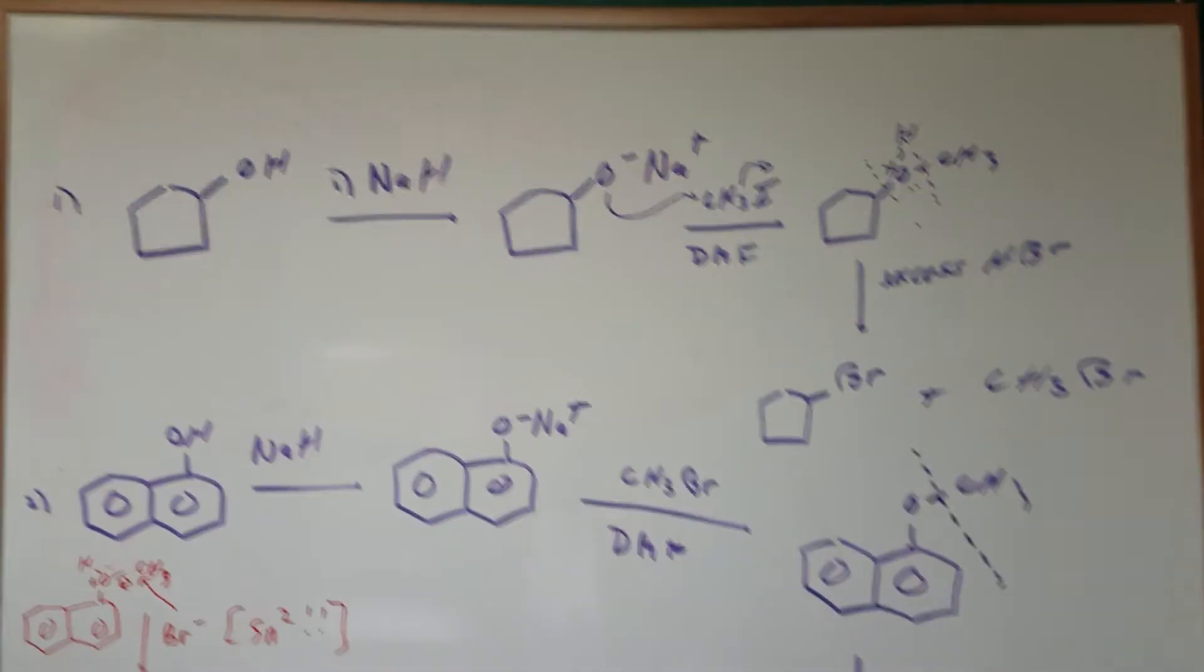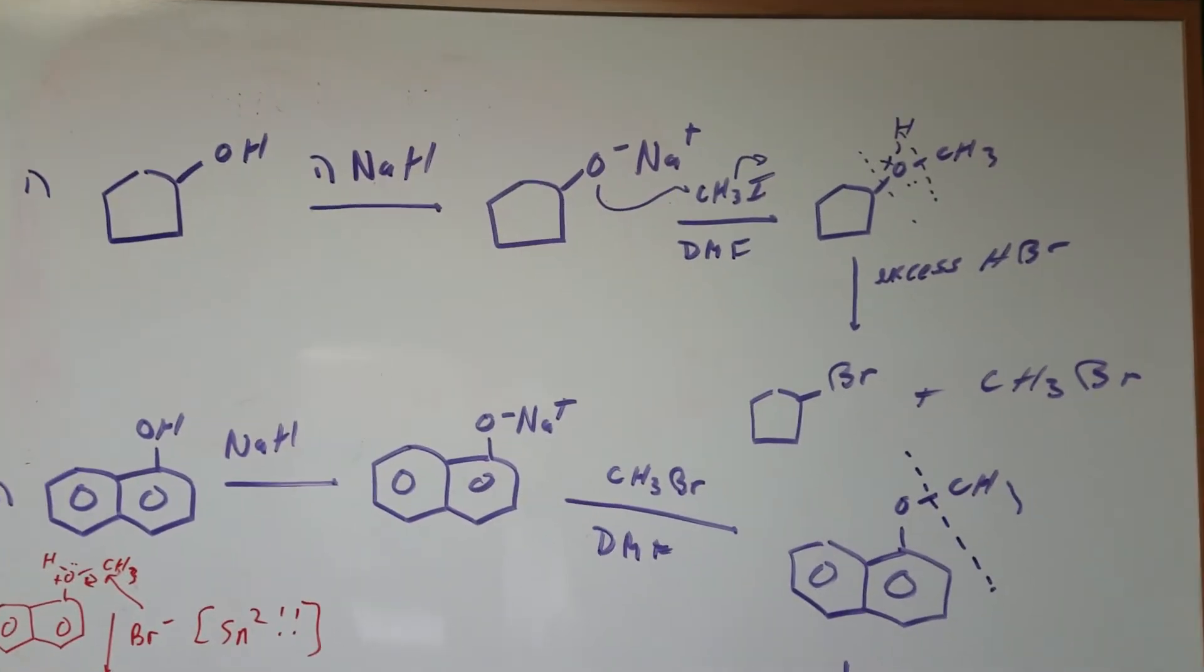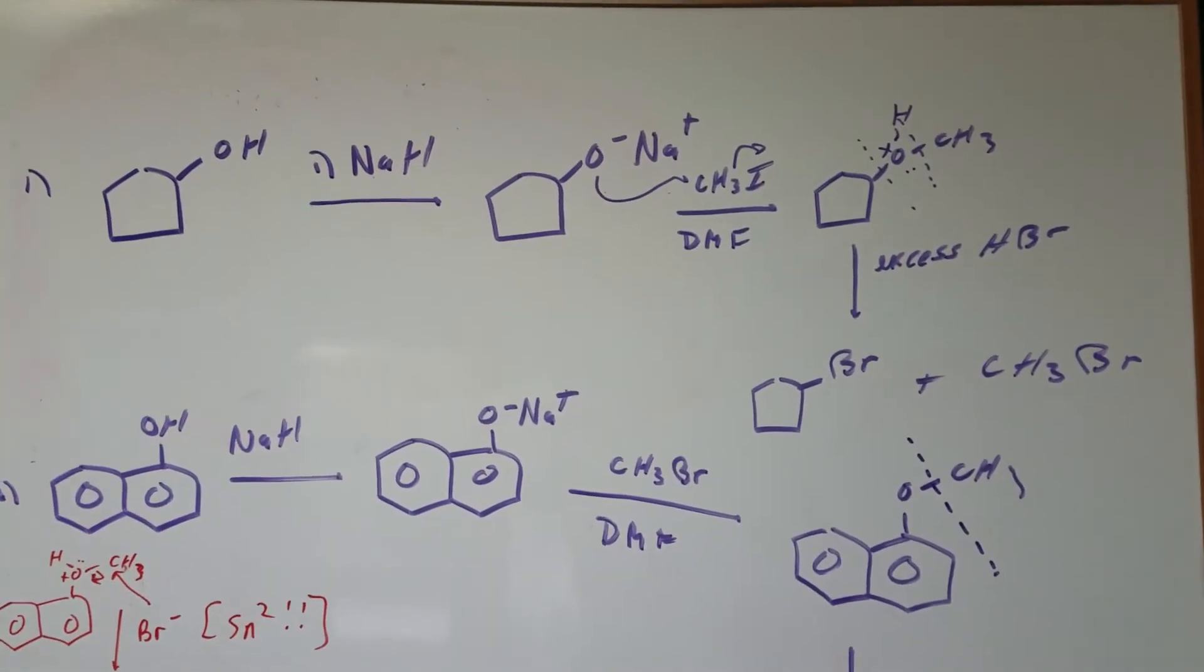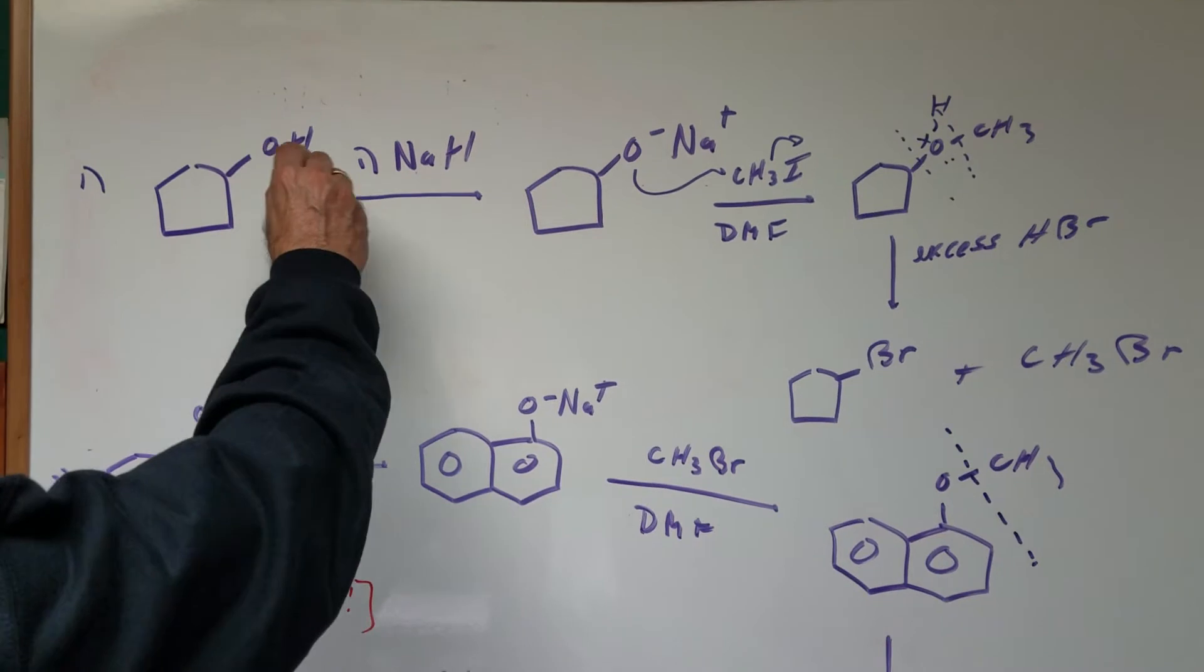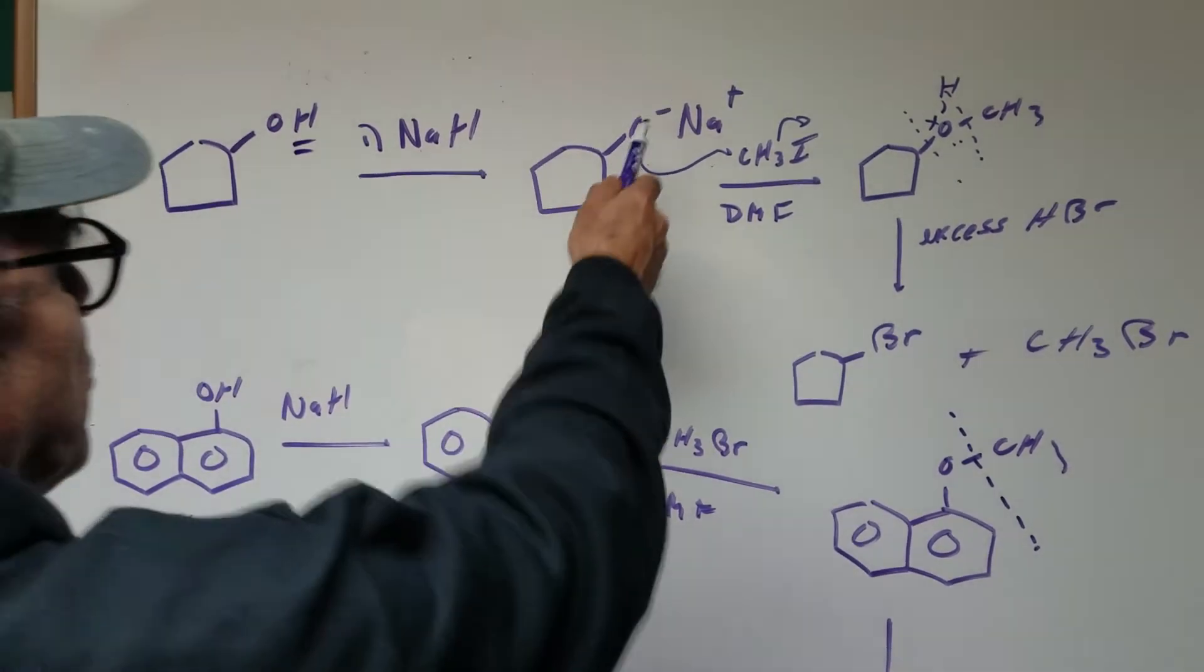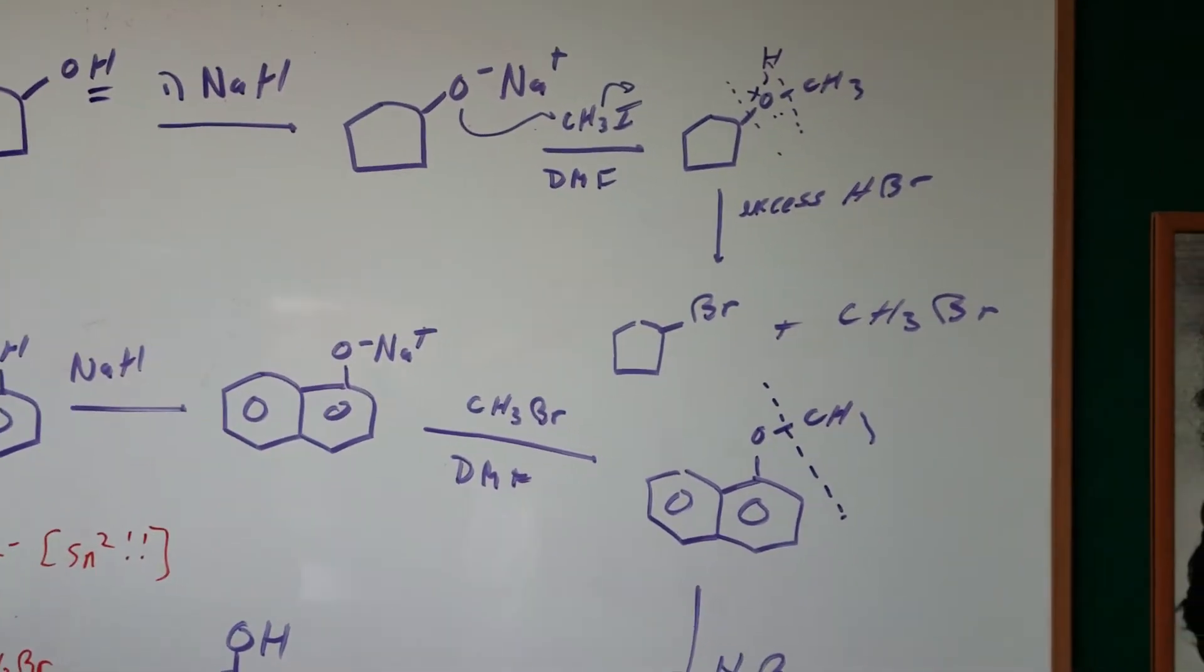Okay Dr. Romano. In the first example I'm going to take cyclopentanol and I'm going to treat it with NaOH. So we remove the acidic proton and we convert it into a nucleophile. Easy enough.